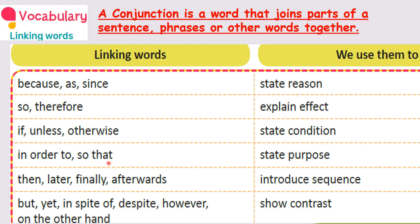Now you are going to make sentences on your own. Let's move on to the next one: then, later, finally, afterwards. All these linking words are used to introduce a sequence. Sequence is when you speak something continuously — you link the second sentence with the first. So for that you will use then, later, finally, afterwards.